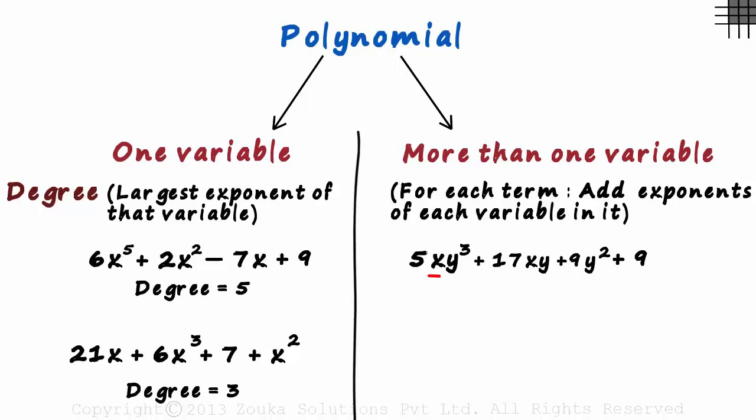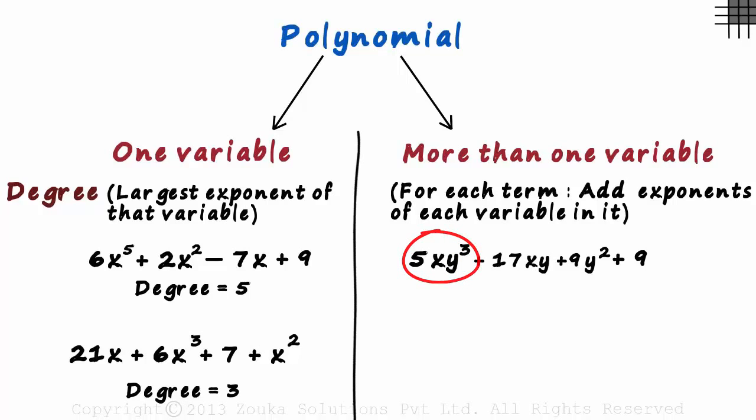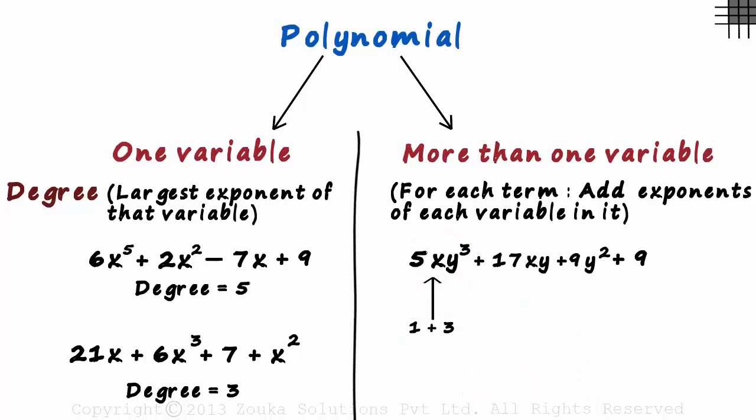So for the first term, we consider the power to be 1 plus 3 which is 4.